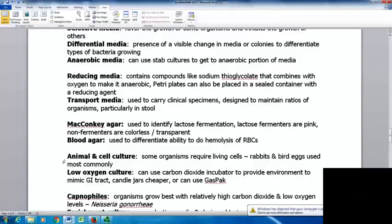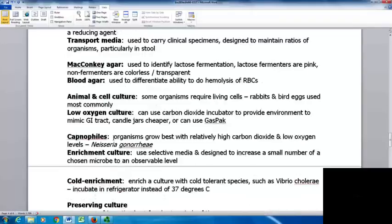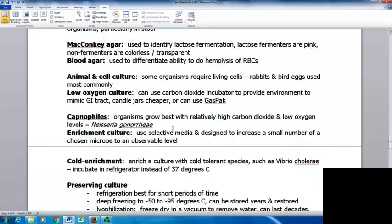You can have animal and cell cultures. Some organisms require living cells - rabbit and bird eggs are used most commonly. Low oxygen cultures can use a carbon dioxide incubator to provide an environment mimicking the gastrointestinal tract. Candle jars are a cheaper way, where literally a candle is placed in the jar with plates, or you can use a gas pack to produce carbon dioxide. Capnophiles are organisms that grow best with relatively high carbon dioxide and low oxygen levels. Neisseria, particularly Neisseria gonorrhoeae, does much better with this kind of environment.